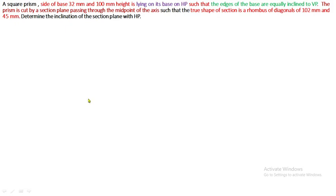First draw the XY. The top view is the square, and the top view has to be drawn by means of 45 degree inclination. Both sides of the square have to be drawn with respect to 45 degrees to XY. The side is 32 mm.